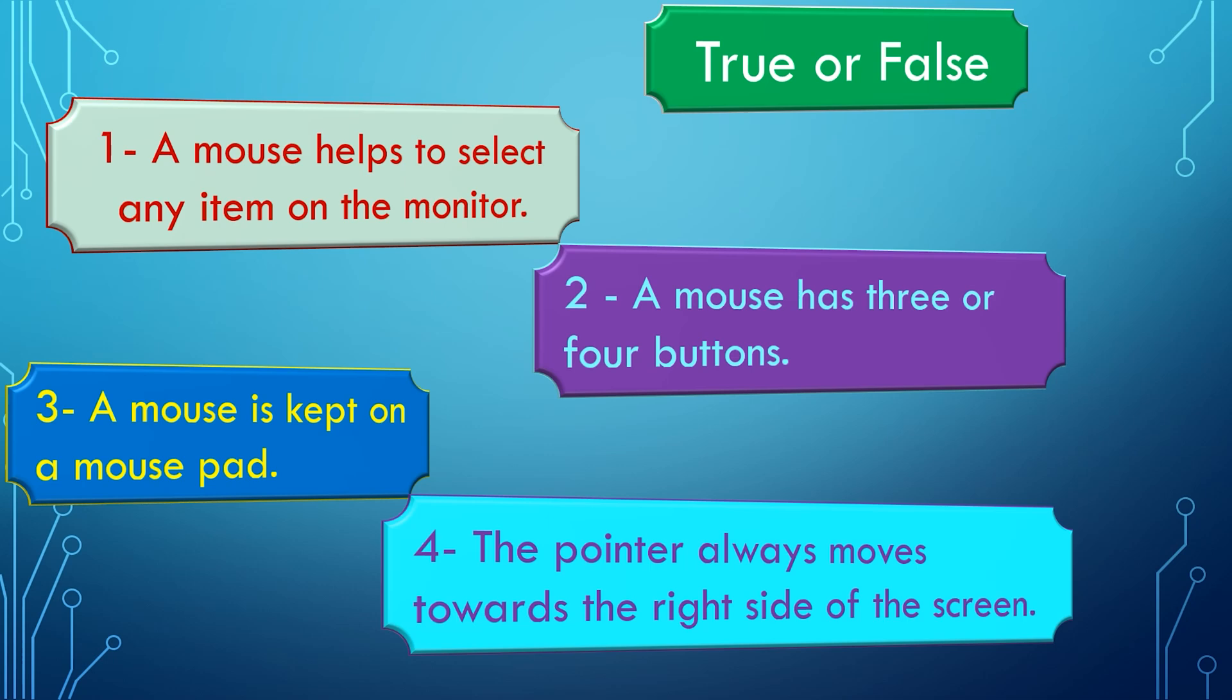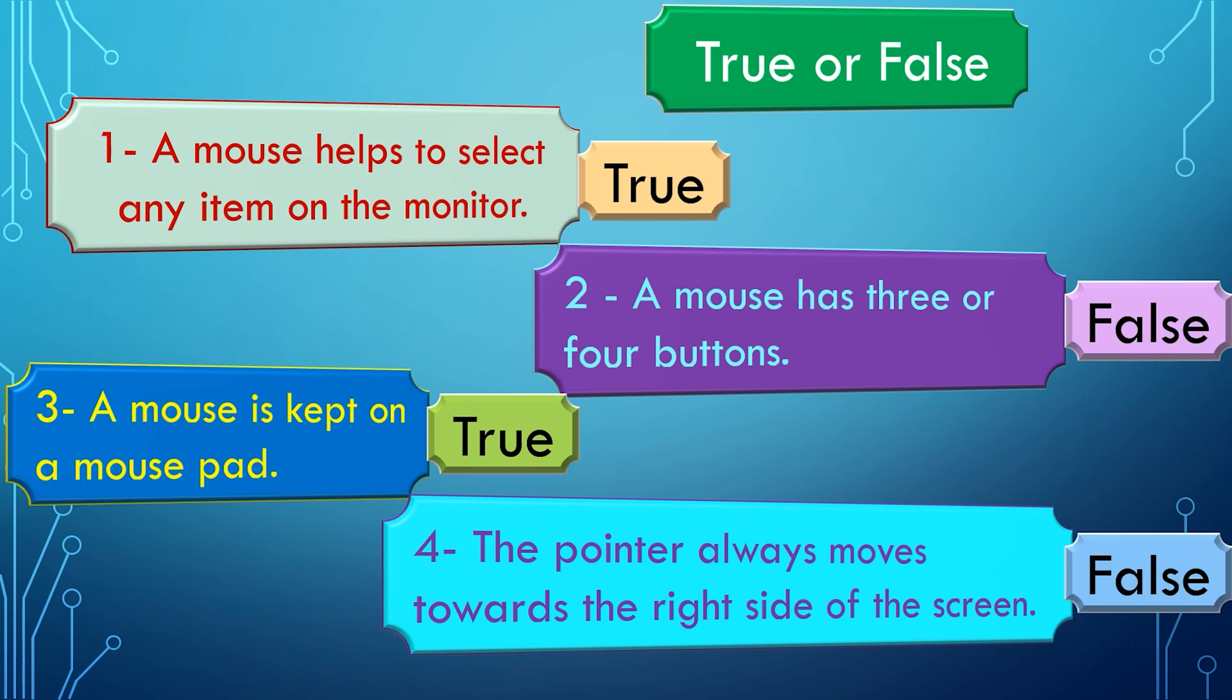Now is the time for correct answers. Number 1: A mouse helps to select any item on the monitor. True. Number 2: A mouse has three or four buttons. False. Number 3: A mouse is kept on a mouse pad. True.